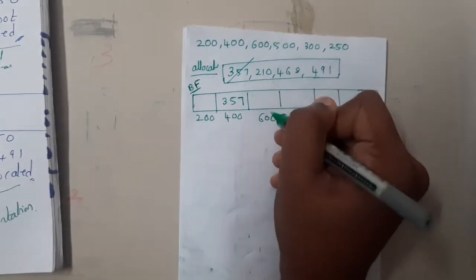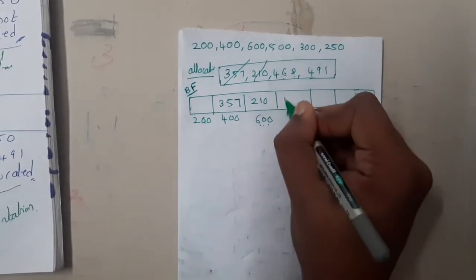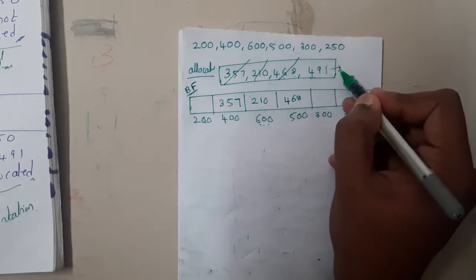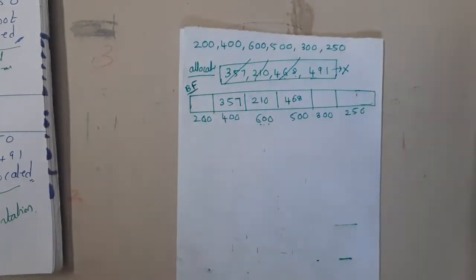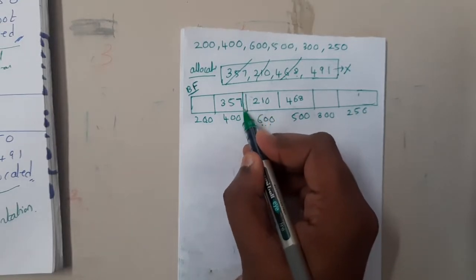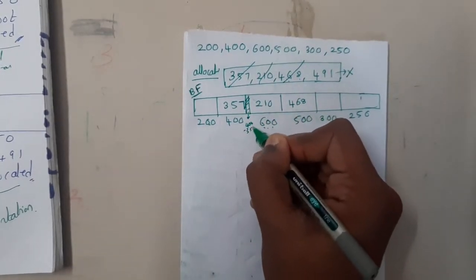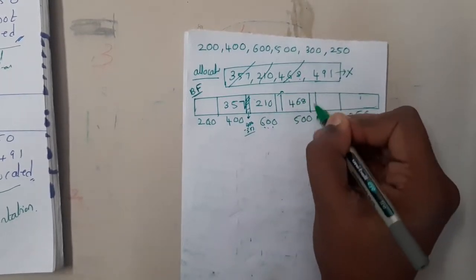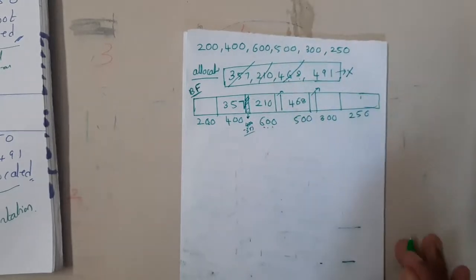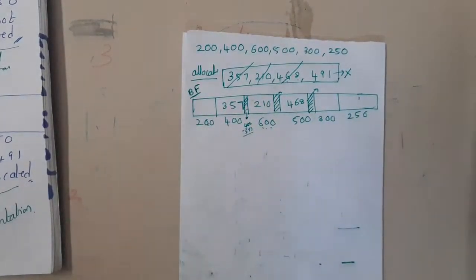Coming to 210: it cannot fit in 200, so moving to 600 — it will fit here. For 468: it cannot fit in 200 or 400 (already used), so it fits in 500. For 491: it cannot fit anywhere, so it is not allocated. Also, fitting 357 in the 400 slot wastes space — 400 minus 357, and 600 minus 210, and 500 minus 468 are all wasted spaces. This is the concept of first fit.